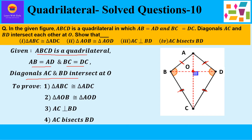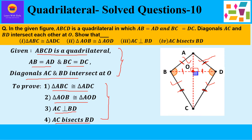We have to prove four things here. First, triangle ABC is congruent to triangle ADC — these two big triangles we have to prove congruent. Second, triangle AOB is congruent to triangle AOD — these two small triangles on the top. Third, diagonal AC is perpendicular to BD, meaning they intersect at 90 degrees. Fourth, diagonal AC bisects BD, meaning AC divides BD into two equal halves, so basically we have to prove BO is equal to DO.